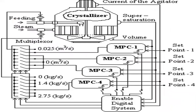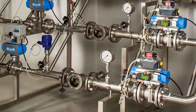The crystallizer feed stream is managed through a multiplexer, giving standard flow rates such as 0.025 cubic meters per second or values of 1.4 kg/s and 2.575 kg/s. These are controlled by microprocessor control units 1 through 4, enabling the digital system to manage set points 1 through 4. For example, set point 1 gives 0.025 cubic meters per second, set point 4 gives 1.4 kg/s. This is how the multiplexer controls the feed and steam entering the crystallizer to manage supersaturation.